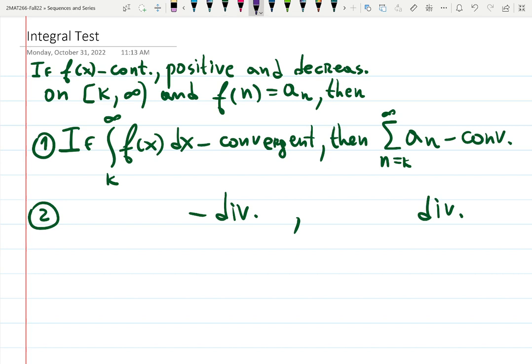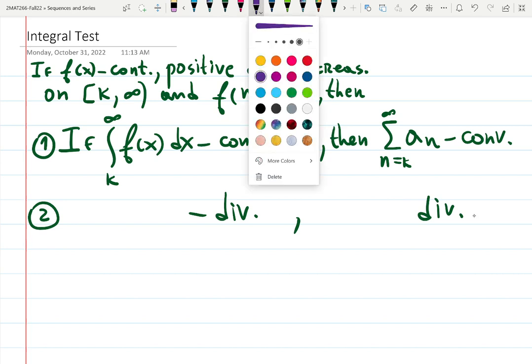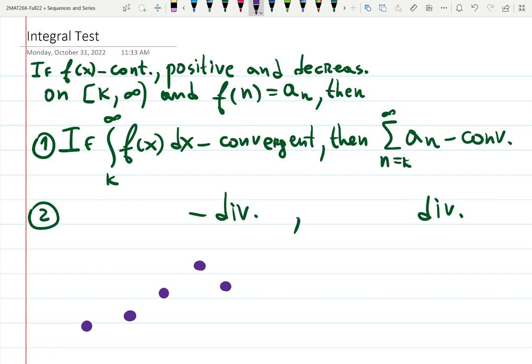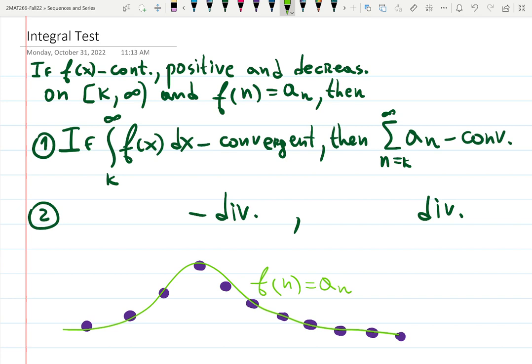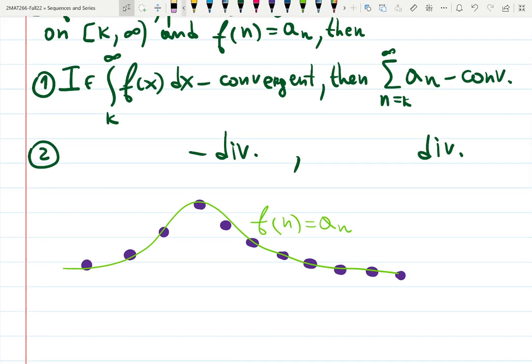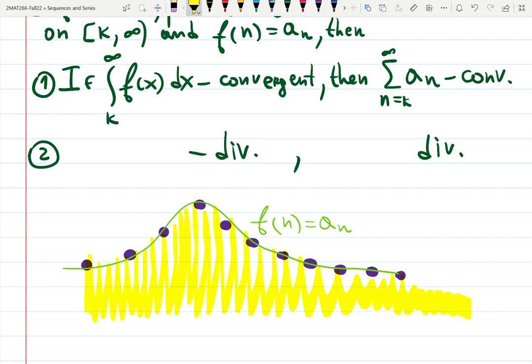I showed you the idea before. If we have fat looking dots of data, the intuitive idea behind it is you connect the dots - that's going to be the function. f(n) matches a_n. Well, you find the integral, right? So you find the areas. The integral takes this area. If the integral is convergent, so it shrinks fast enough